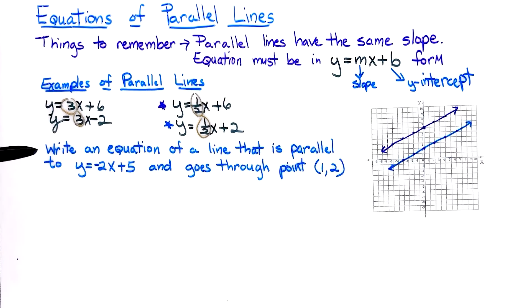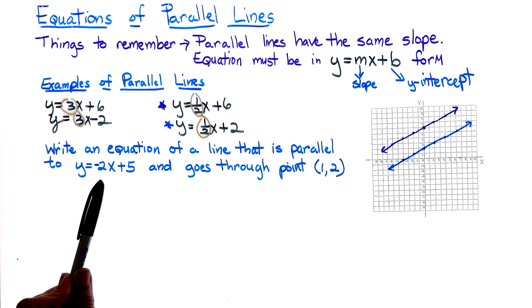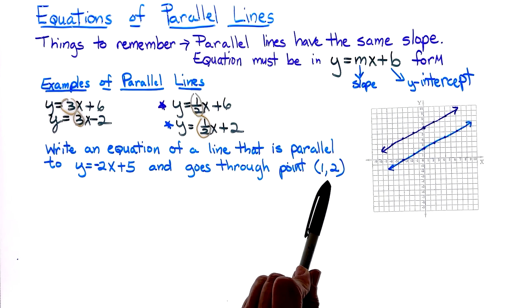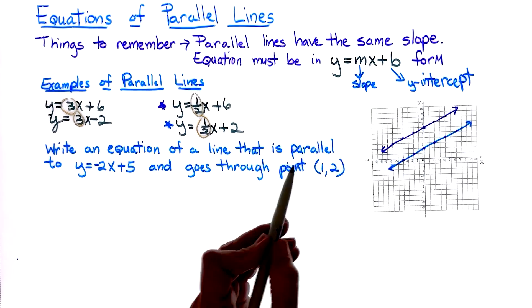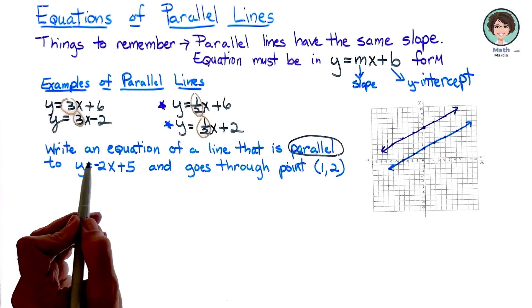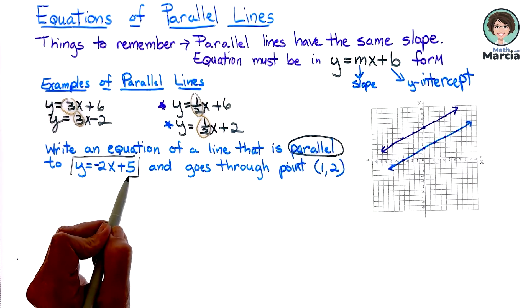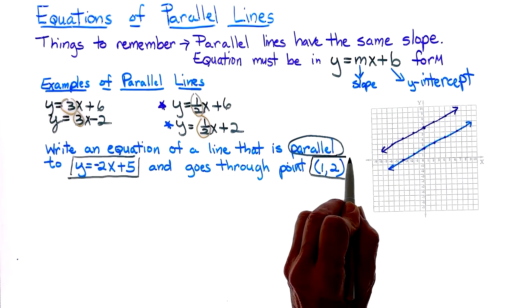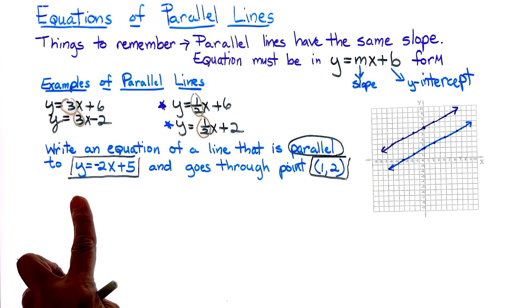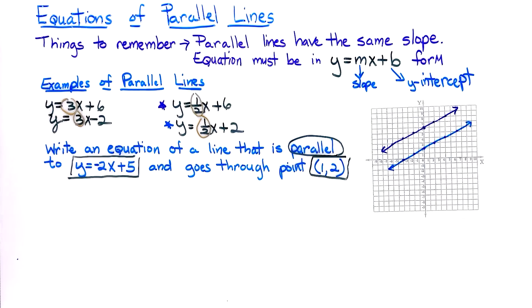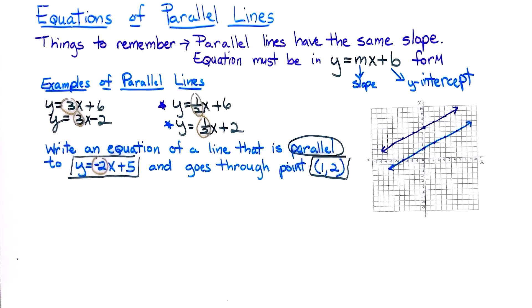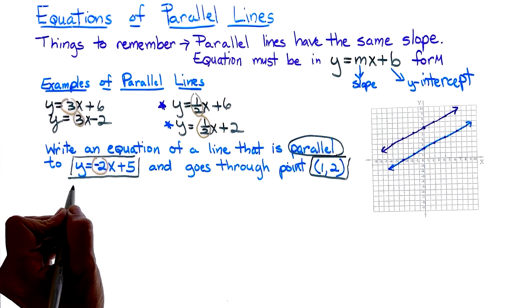If you're given a problem: write an equation of a line parallel to y equals negative 2x plus 5 that goes through the point (1, 2). Let's mark the text — we want a line parallel to the given line, going through point (1, 2). I right away see the slope is negative 2, so m equals negative 2.